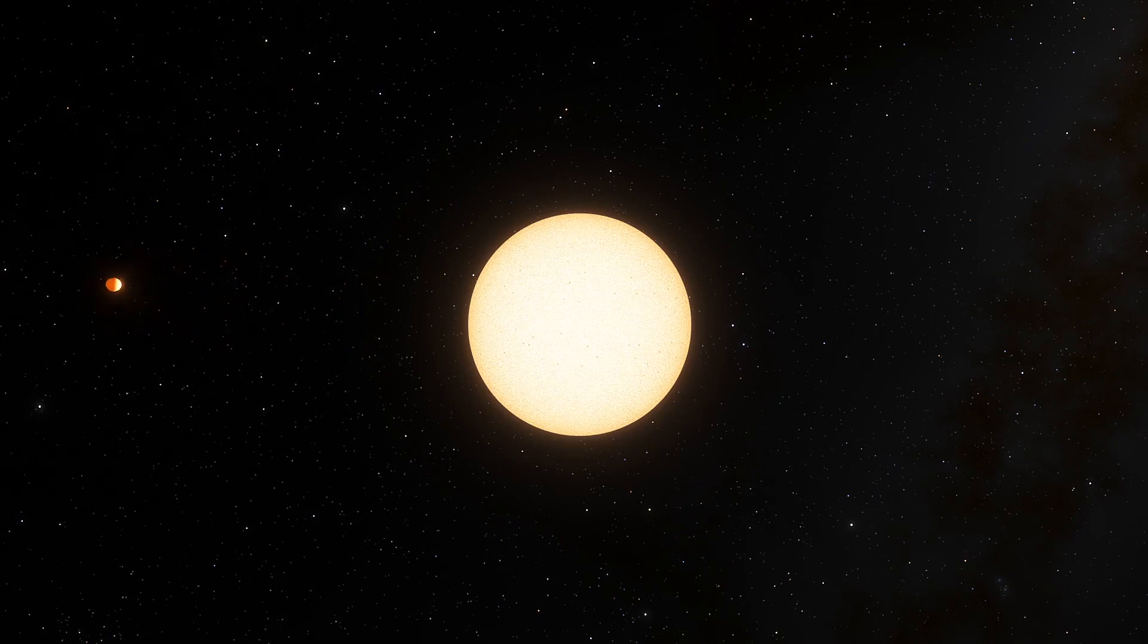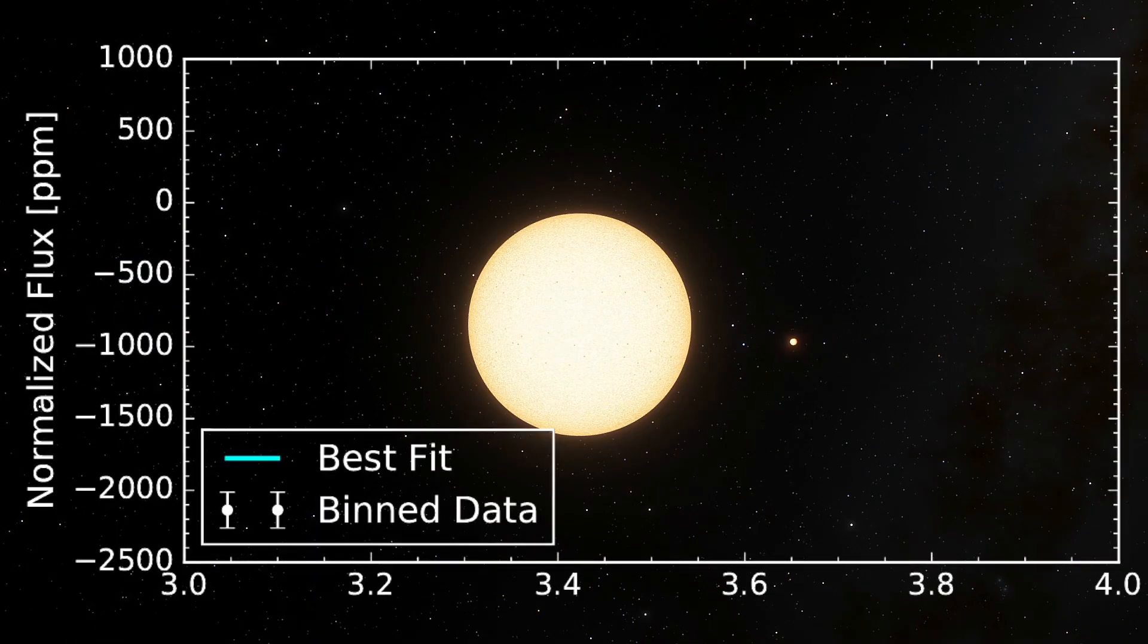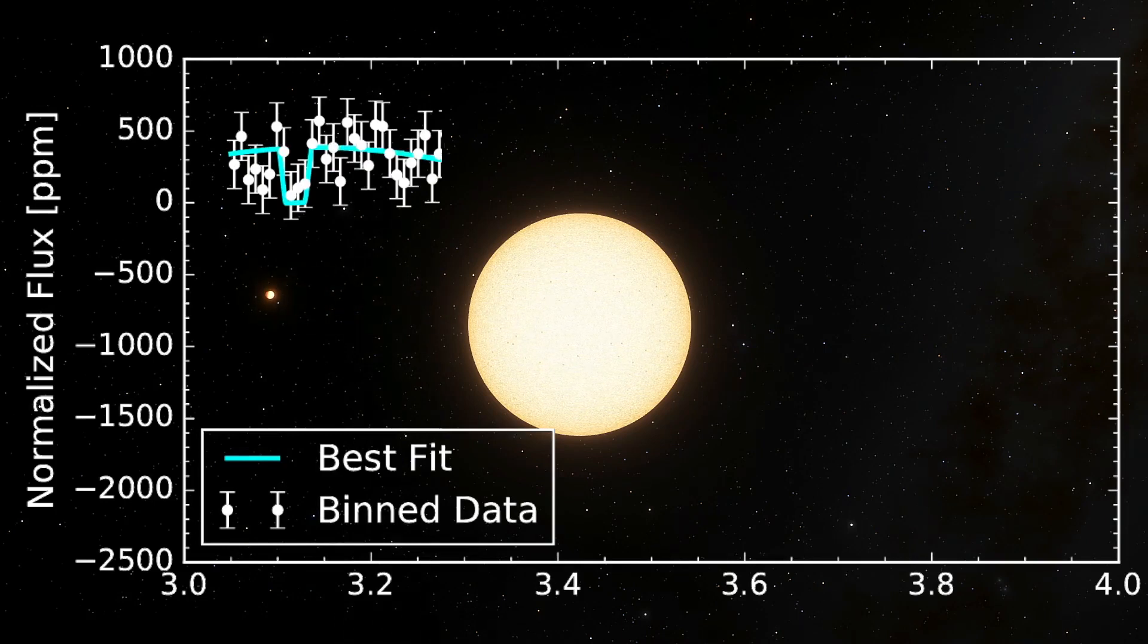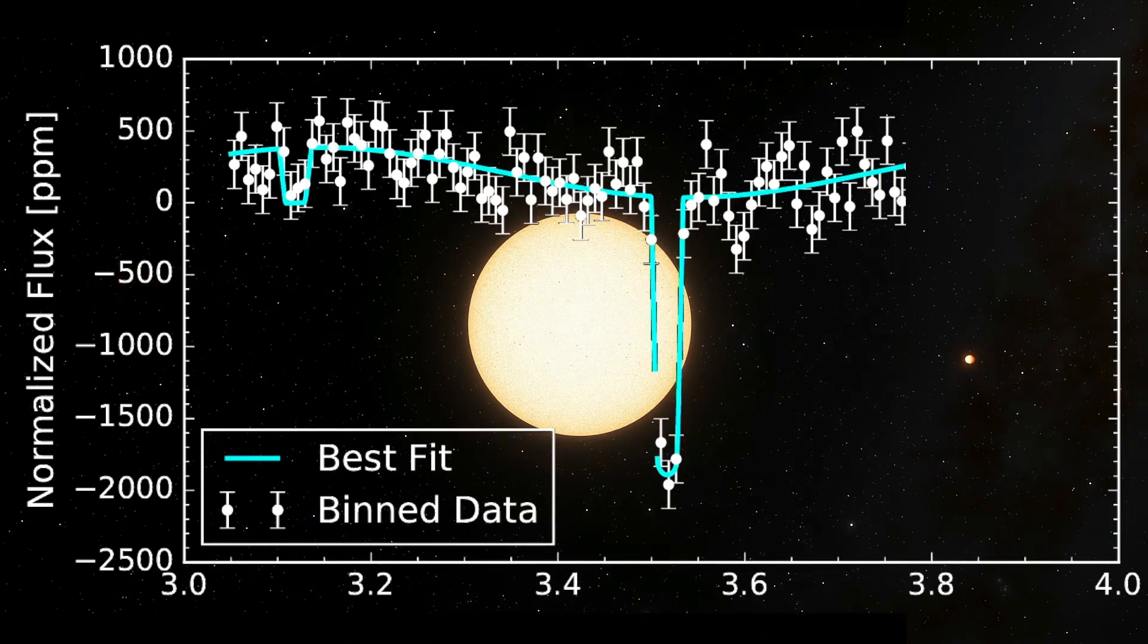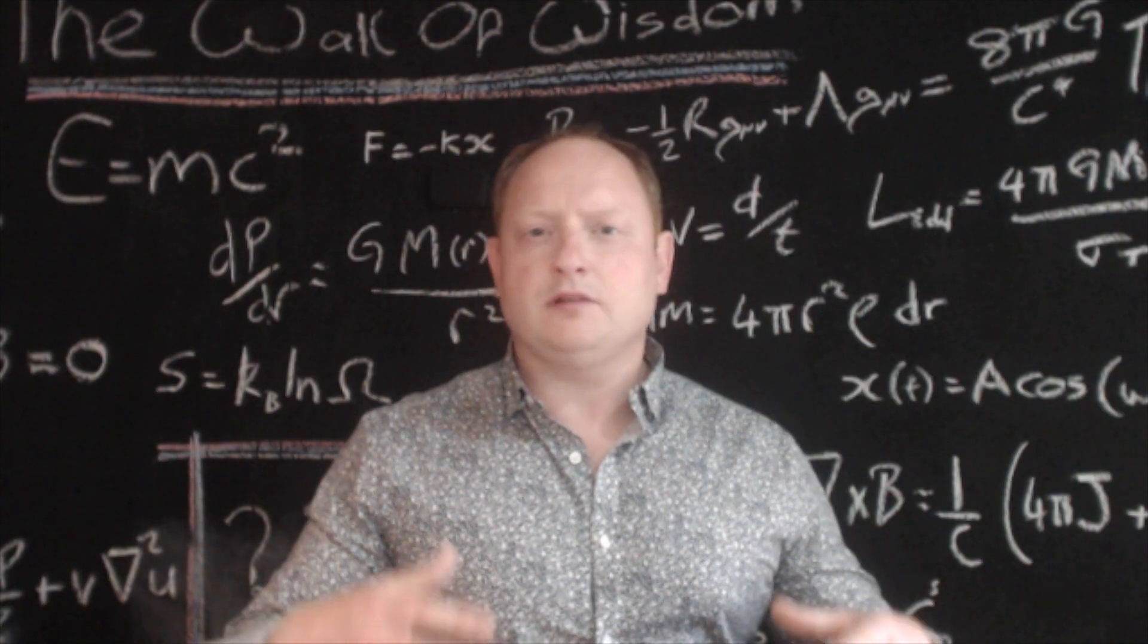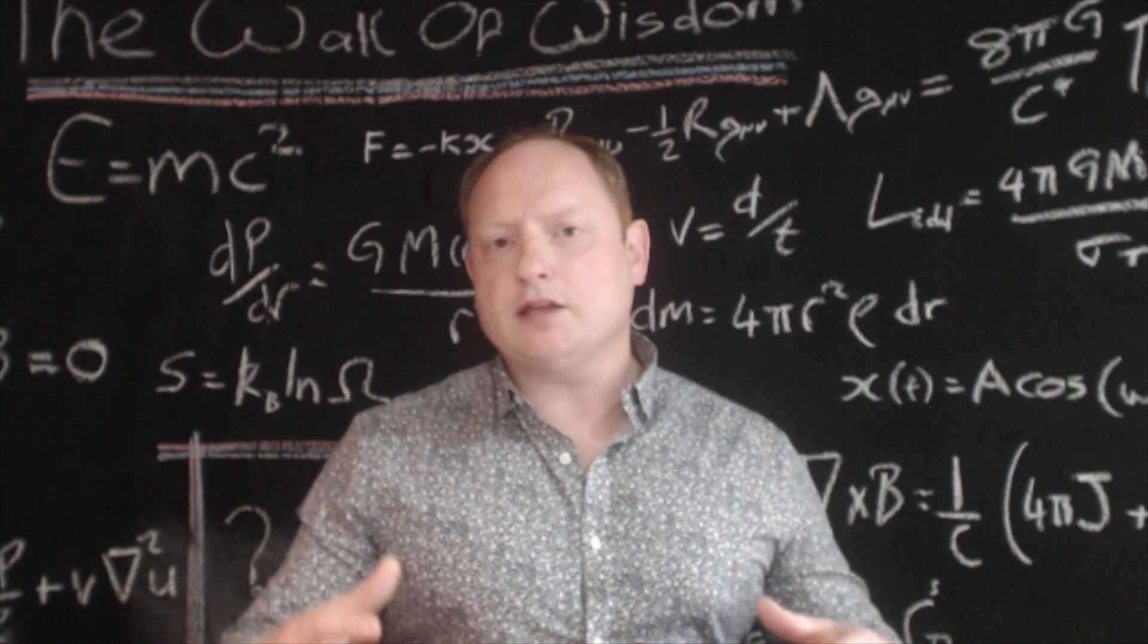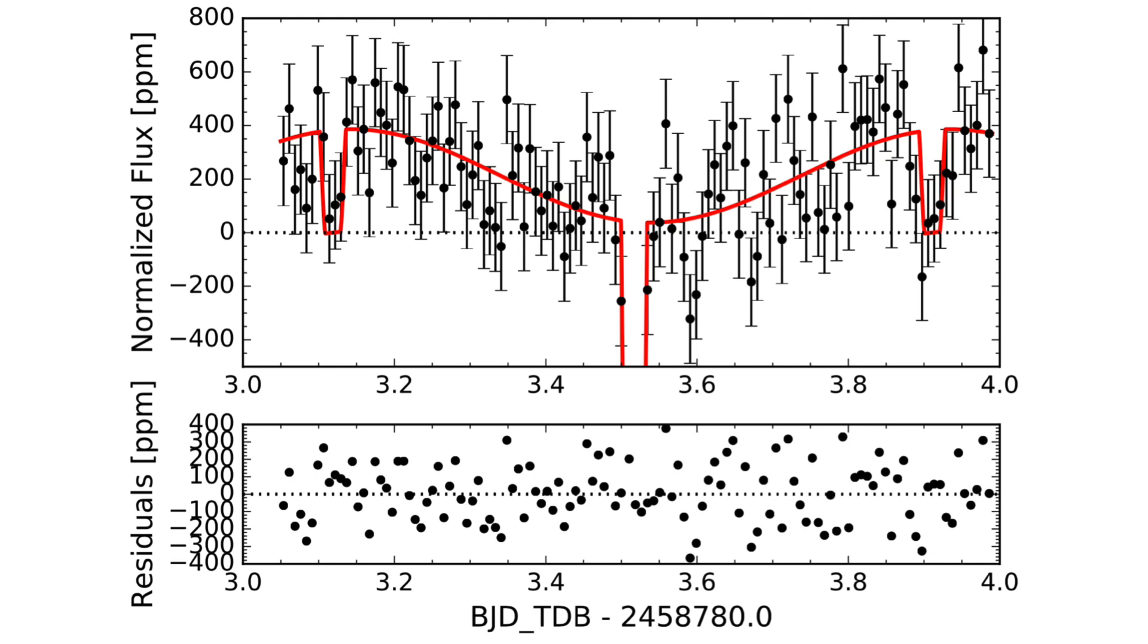Phase curves in general provide an overall global view of the planet and its atmosphere, allowing the thermal structure to be probed, along with the composition and some of the dynamical processes that could be going on within the planetary atmosphere, like winds for example.